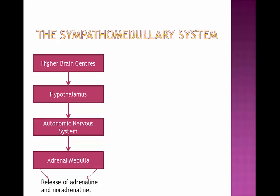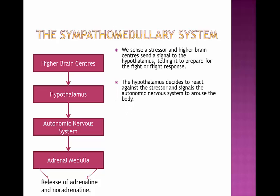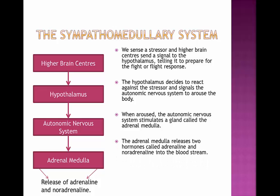Now we're going to look at the sympathomedullary system. Again, this is a flow chart to show how the sympathomedullary system works. It begins with the higher brain centers, just like the pituitary adrenal system. We sense a stressor and the higher brain centers signal the hypothalamus, telling it to prepare for the fight-or-flight response. The hypothalamus decides to react against the stressor and signals the autonomic nervous system to arouse the body. Once aroused, the autonomic nervous system will then stimulate a gland called the adrenal medulla.